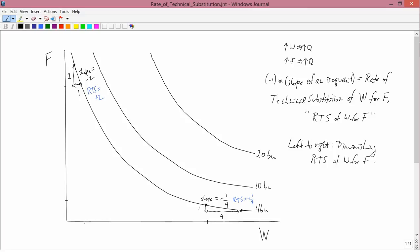By the way, as something of a footnote, it turns out that the rate of technical substitution of W for F equals 1 divided by the rate of technical substitution of F for W. I'm not going to expect you to know that, but it could come in handy. In other words, if you happen to switch F and W on the axis, since after all it's completely arbitrary which you put on which axis,